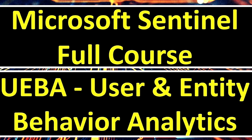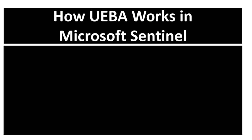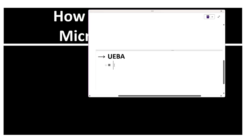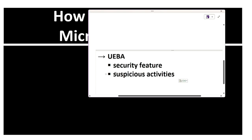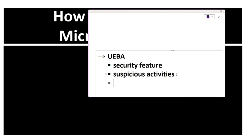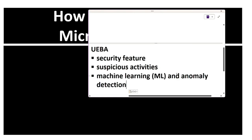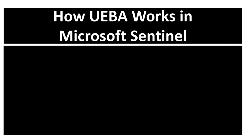Let's learn what is UEBA - User and Entity Behavior Analytics - and how UEBA works in Microsoft Sentinel. UEBA in Microsoft Sentinel is a security feature. It detects suspicious activities by analyzing user and entity behaviors over time. Instead of relying solely on static rules or signatures, UEBA uses machine learning and anomaly detection to identify potential threats.